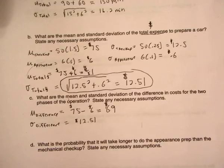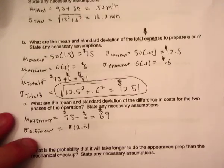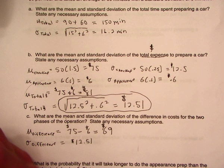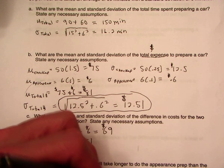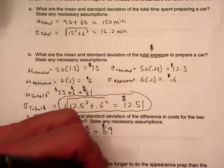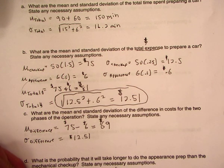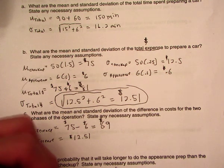The last question asks: what is the probability that it takes longer to do the appearance prep than the mechanical checkup? Looking back at part A, the difference in times is 90 minus 60, so the checkup takes 30 minutes longer on average than the appearance prep. The standard deviation of that difference in time is the same answer we got before — 16.2 minutes.